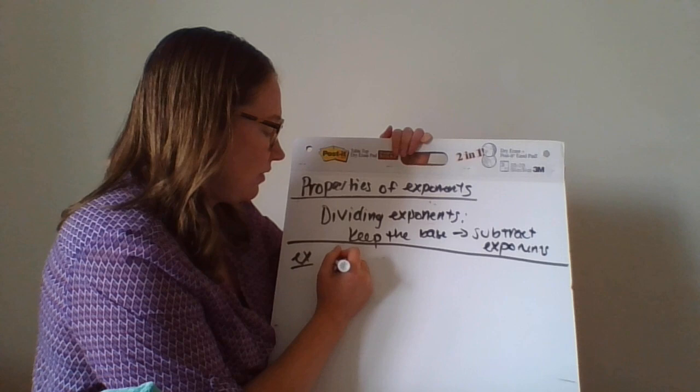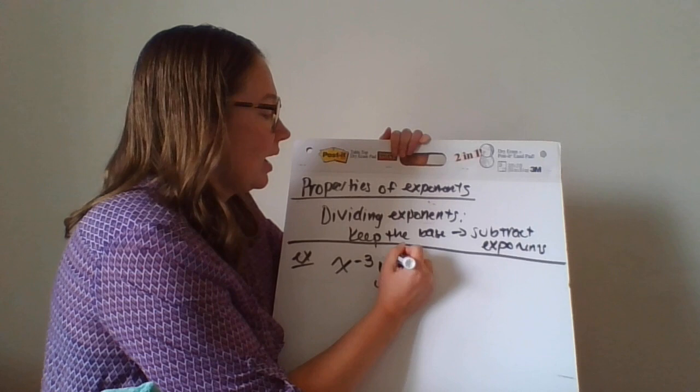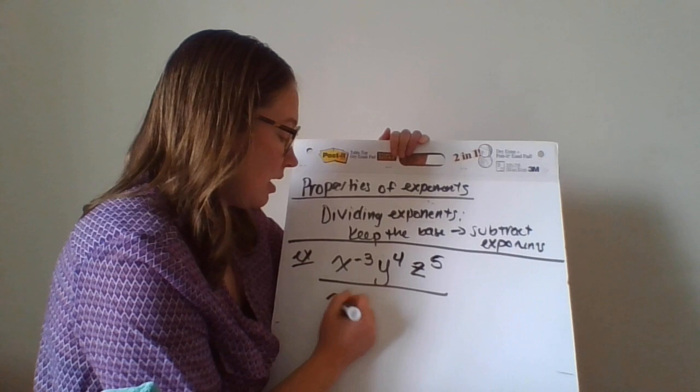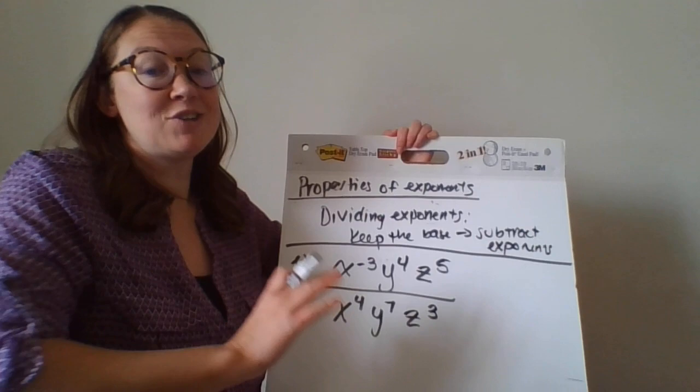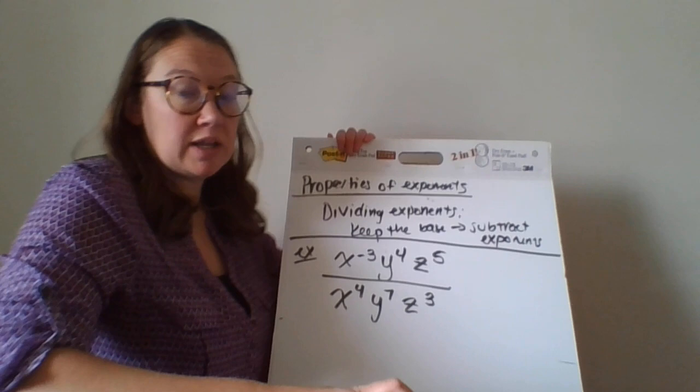So let's have x to the negative three, y to the fourth, and z to the fifth. We're going to put that over x to the fourth, y to the seventh, and z to the third. So this is a pretty crazy one because we've got multiplication, we've got negative, we've got division, we've got all kinds of stuff going on in here.